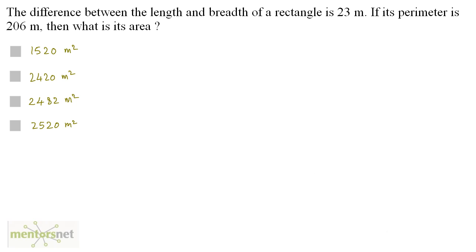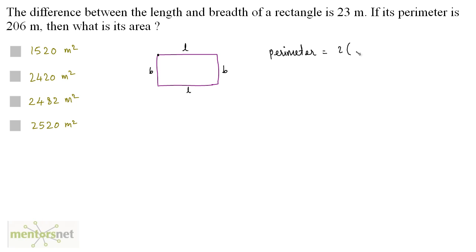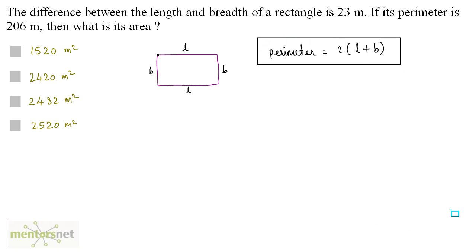What is a perimeter? Consider this rectangle. You start from one corner and encircle the rectangle along its sides coming back to the original point, and the distance travelled will be the perimeter. In other words, perimeter is length plus breadth plus length plus breadth, which equals twice of length plus breadth. This is a formula to be remembered — a very important formula.